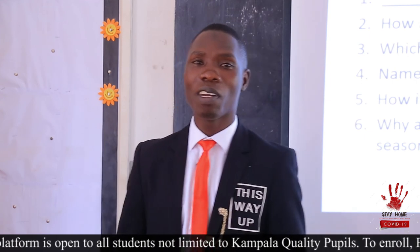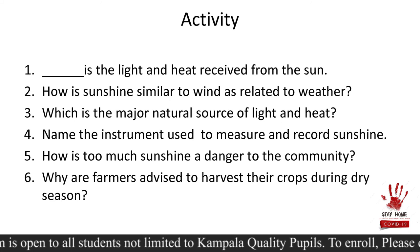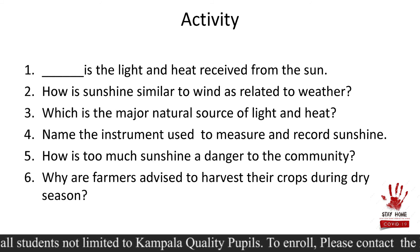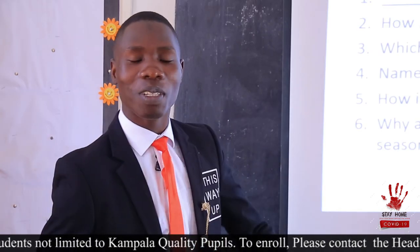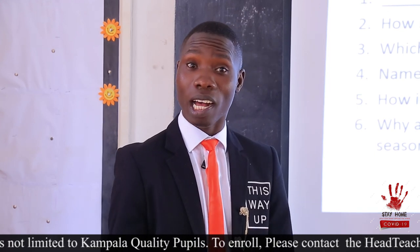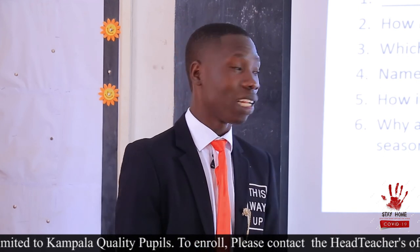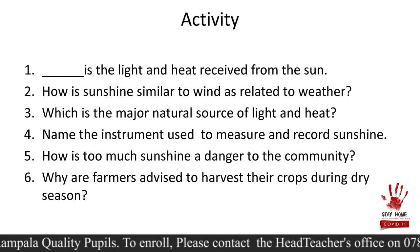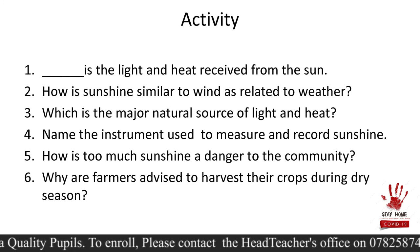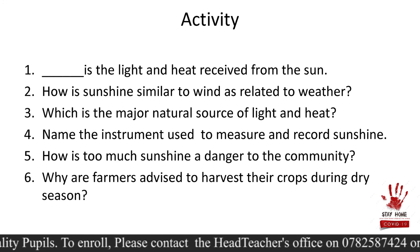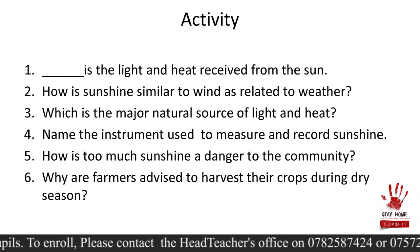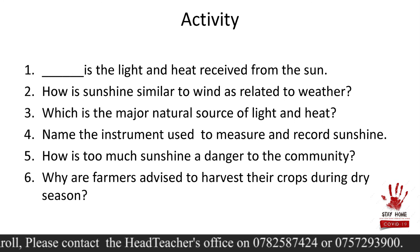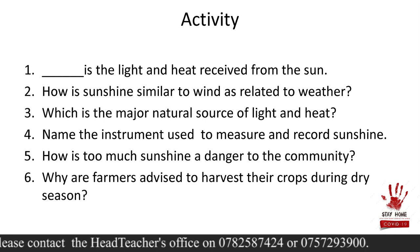I have designed for you a simple activity — just six questions. Today I'm going to read through with you but next time you are going to read on your own. Question one: dash is light and heat received from the sun. Question two: how is sunshine similar to wind as related to weather? Question three: which is the major natural source of light and heat? Question four: name the instrument used to measure and record sunshine. Question five: how is too much sunshine a danger to the community? Question six: why are farmers advised to harvest their crops during dry season?